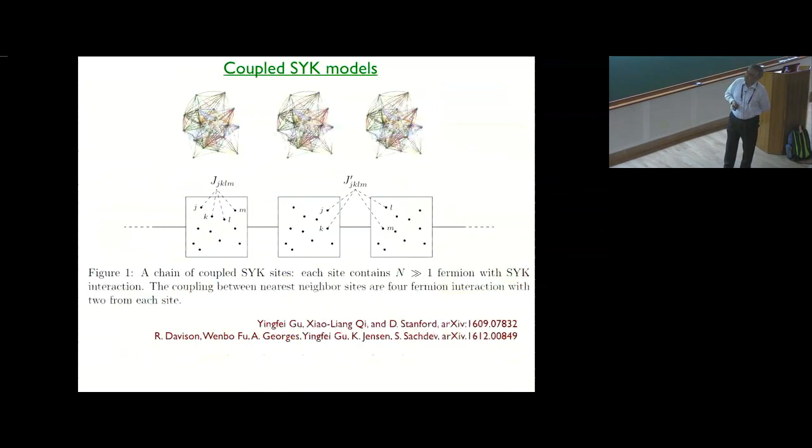I want to talk about the coupled SYK models that David just discussed. These turn out to realize this disordered metal state that I mentioned in the beginning without quasi-particle excitation. So now we think of the original SYK model as sitting on some quantum dot, and then there are couplings between neighboring dots which are also of the four fermion type. In fact, there was old work by Georges and Parcollet where they considered something like this with two fermion couplings, and that turns out to be relevant, and the system just flows ultimately to a Fermi liquid.